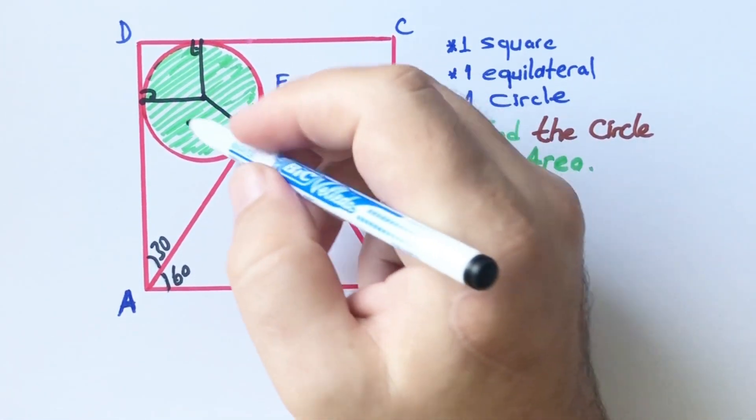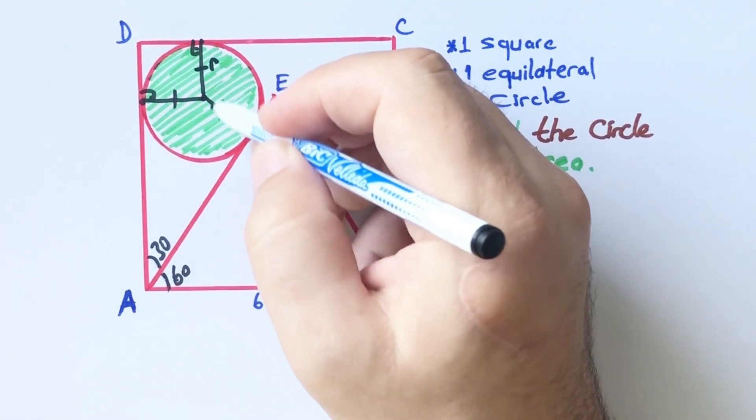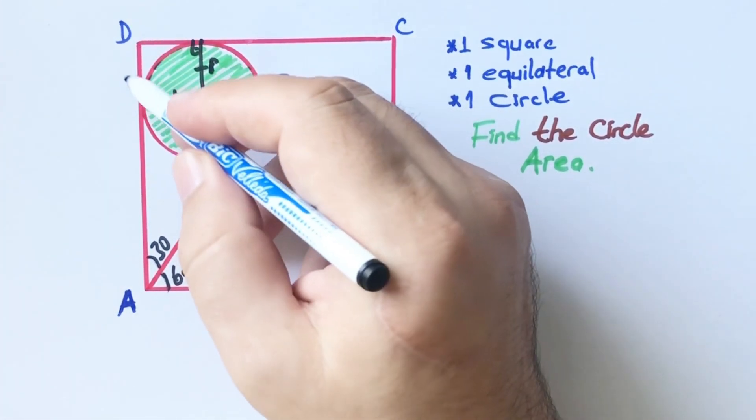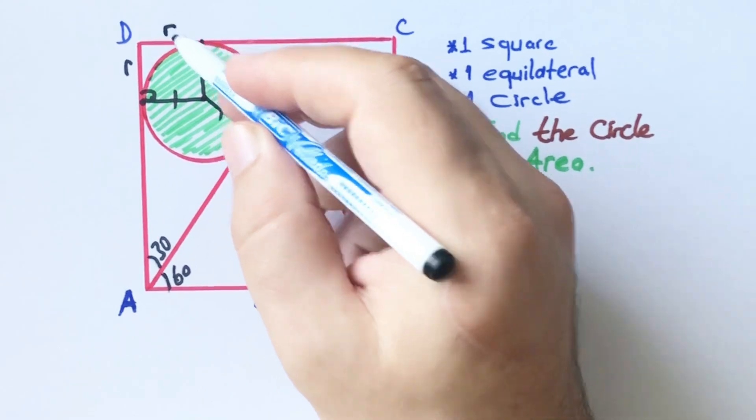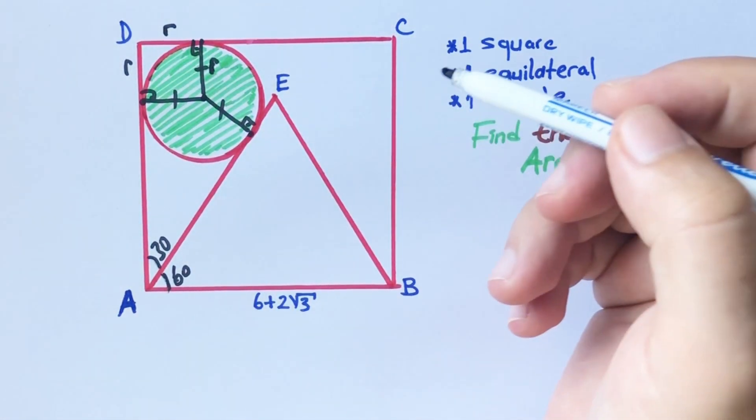These three lengths must be the radius, and this length is also our unit, and here is also our unit.